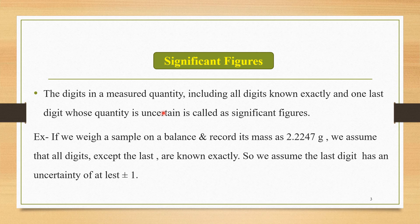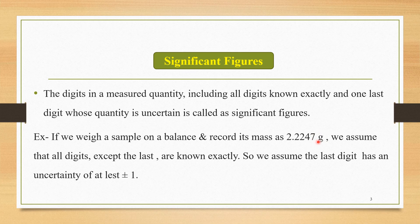This property is expressed in terms of significant figures. For example, if we weigh a sample on a balance and record its mass as 2.2247 grams, we assume that all digits except the last are known exactly, and the last digit has an uncertainty of at least ±1. In this number 2.2247, all digits except the last digit 7 are certain, while the last digit 7 is uncertain, with an uncertainty of at least ±1.